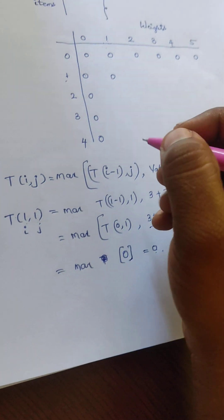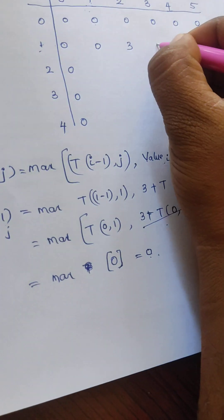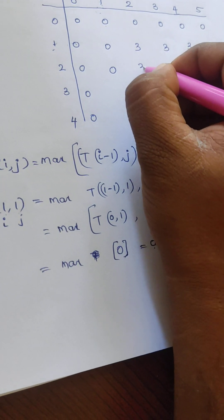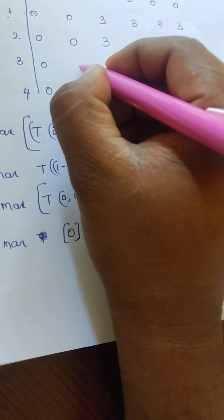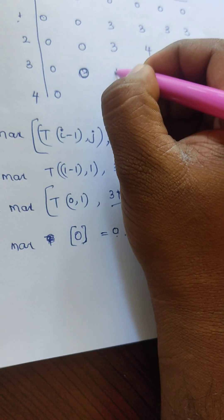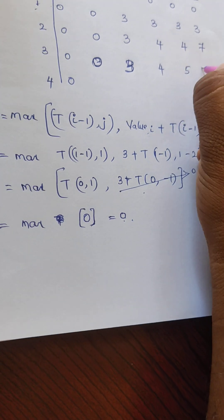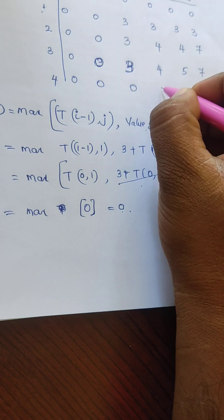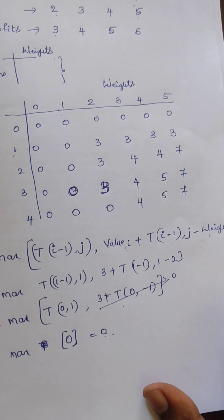Writing all the computed values into the matrix representation, the filled-in values are: row 1: 0, 3, 3, 3, 3; row 2: 0, 3, 4, 4, 7; row 3: 0, 0, 0, 4, 5, 7; row 4: similar values completing the table. This gives us the overall matrix representation table.